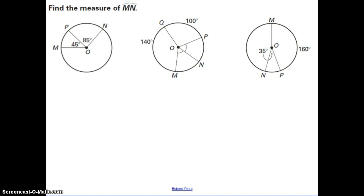Here we want to find the measure of arc MN in each of these. And remember MN is referring to the minor arc. So here we want to find the measure of arc MN. Now central angle is 45, so this arc is 45. Central angle is 85, so this is 85. So to find MN, we're just going to use the arc addition postulate, 45 plus 85, to give us a total of 130 degrees.